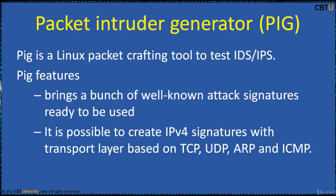PIG, an acronym for Packet Intruder Generator, is a Linux packet crafting tool. You can use PIG to test your IDS and IPS. PIG features include a collection of well-known attack signatures ready to be used, which can be expanded with more specific signatures according to your requirements. It is possible to create IPv4 signatures with a transport layer based on TCP, UDP, RAW, and ICMP.